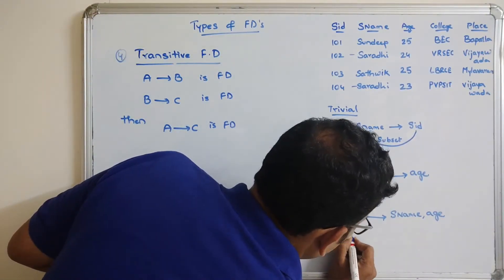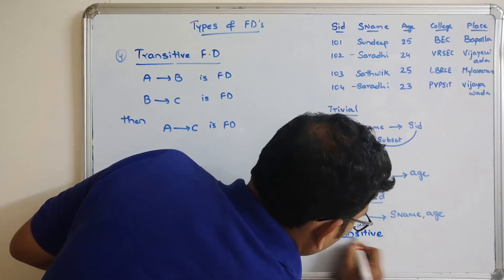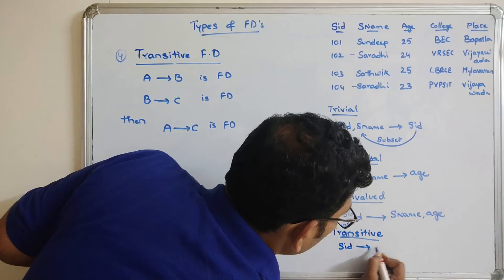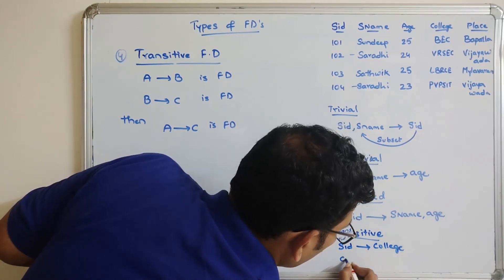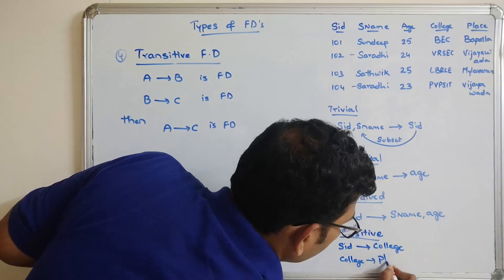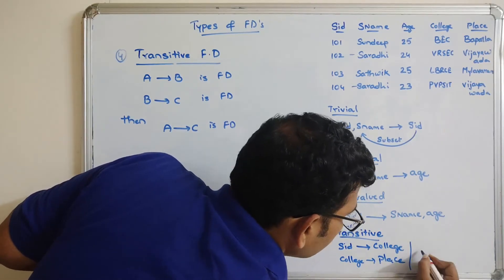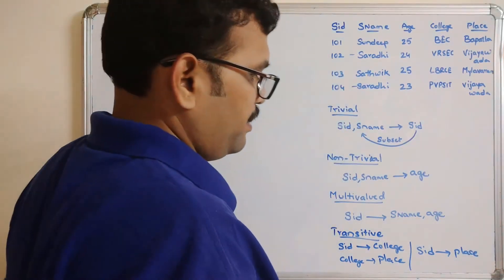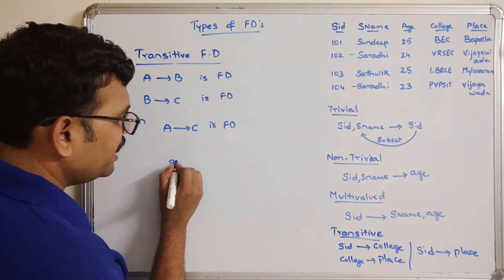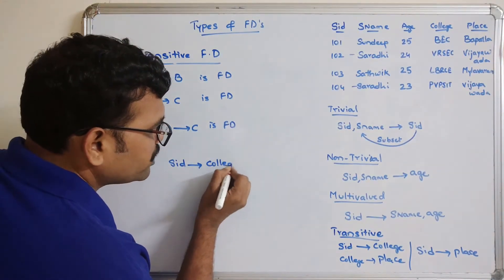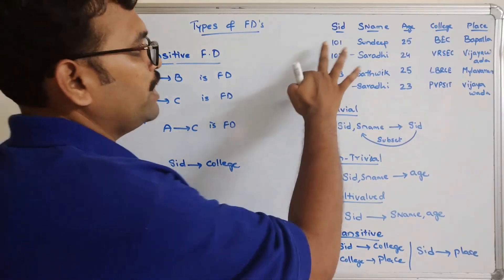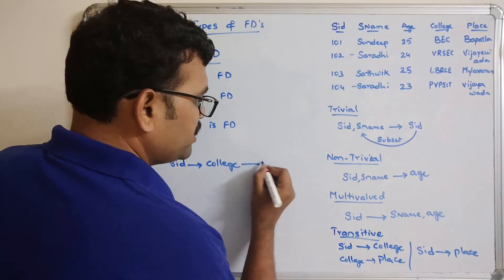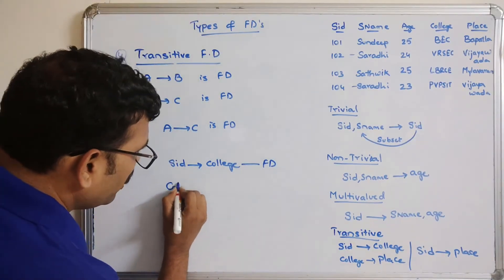For the transitive example: SID tends to College, and College tends to Place. So simply we can say SID tends to Place. First, checking SID tends to College — SID values 101, 102, 103, 104 show no repetition, so this is a valid functional dependency.